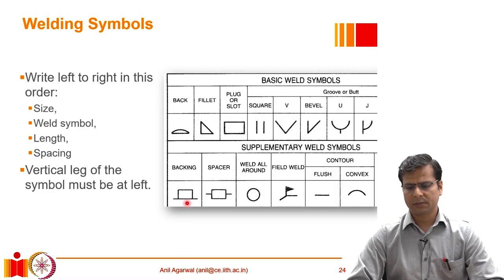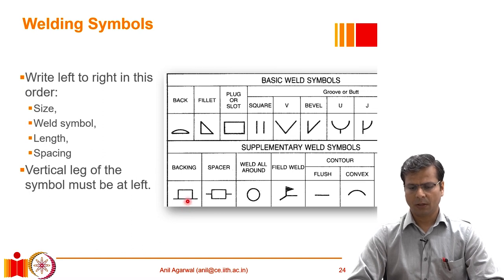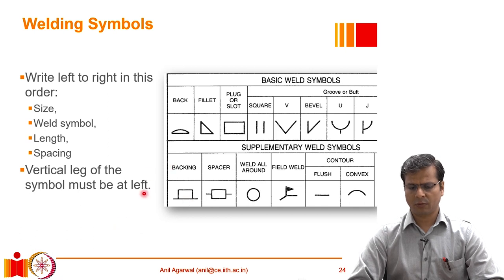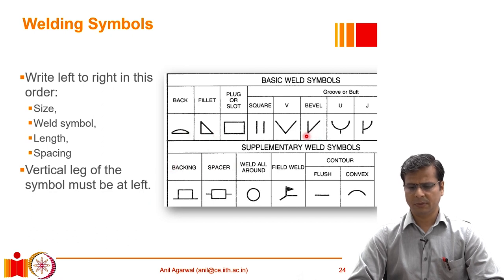There are various symbols used to represent different types of welds in engineering drawings. We will see through some examples. Basically, first we draw an arrow, we mark the weld location, and from there we draw an arrow on which we put various symbols.